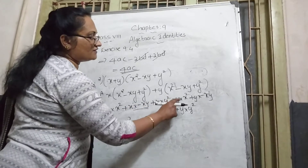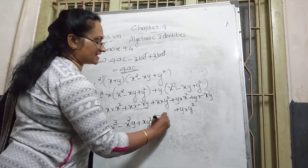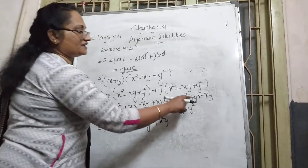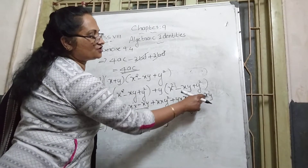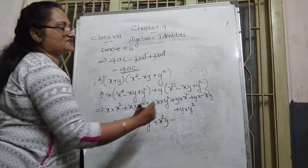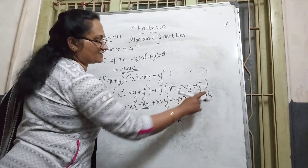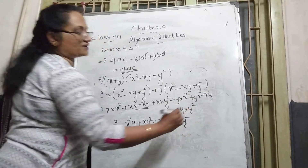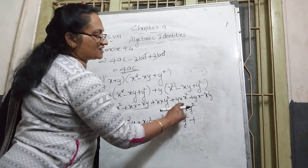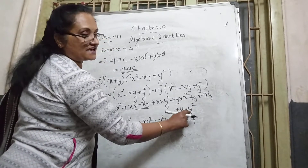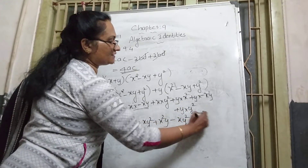x into y² becomes +xy². Then y into x² becomes x²y. The next term: y multiplied with −xy — plus into minus gives minus. x is single, y has power 1 + 1 = 2, so −xy². Last term: y into y² gives y³ (power 1 + 2 = 3).